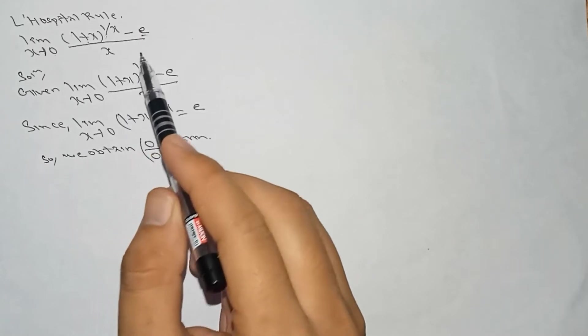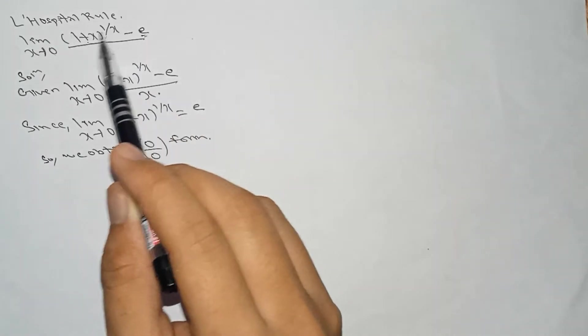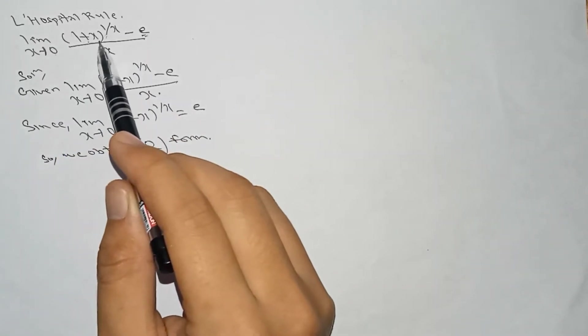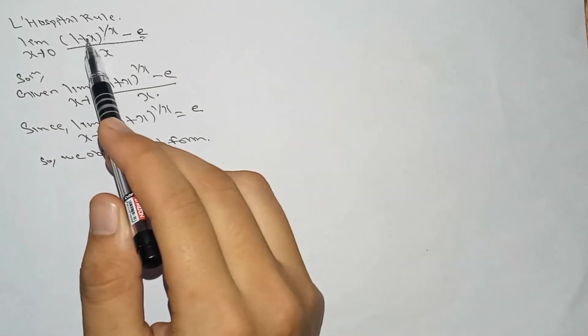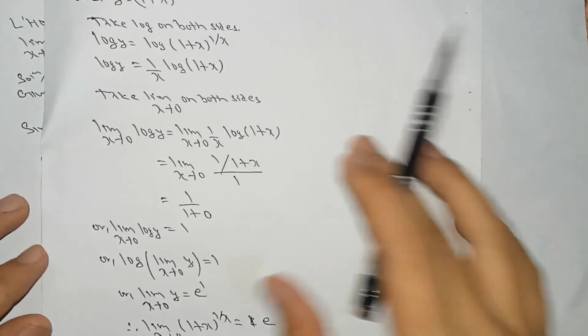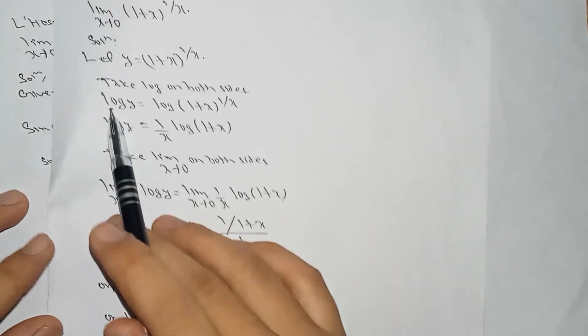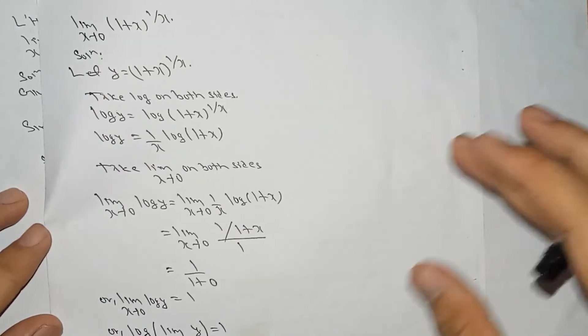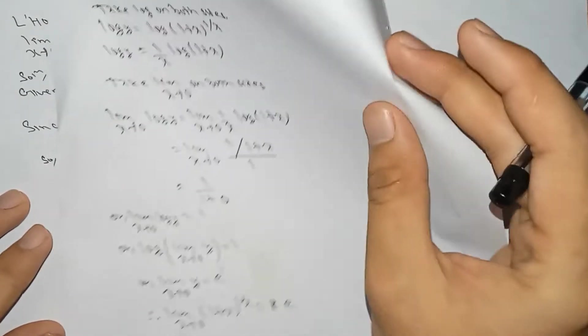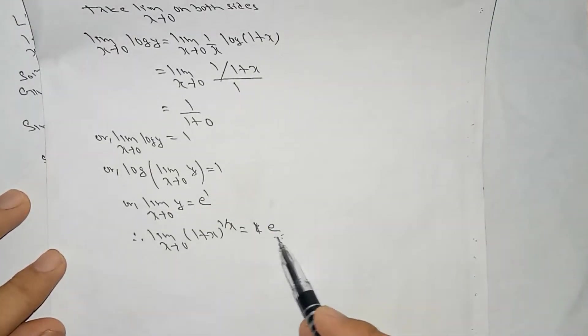Here in the question you can see we have e, so if we put x tends to 0 in the term containing x, it doesn't become either 0 by 0 form or infinity by infinity form. So we have to find out the L'Hôpital of (1 plus x) to the power 1 by x separately. The limit x tends to 0 of (1 plus x) to the power 1 by x gives us e.